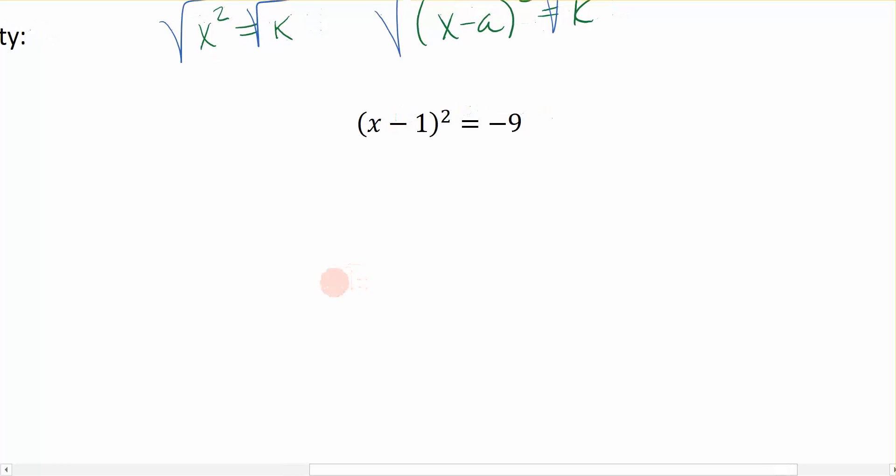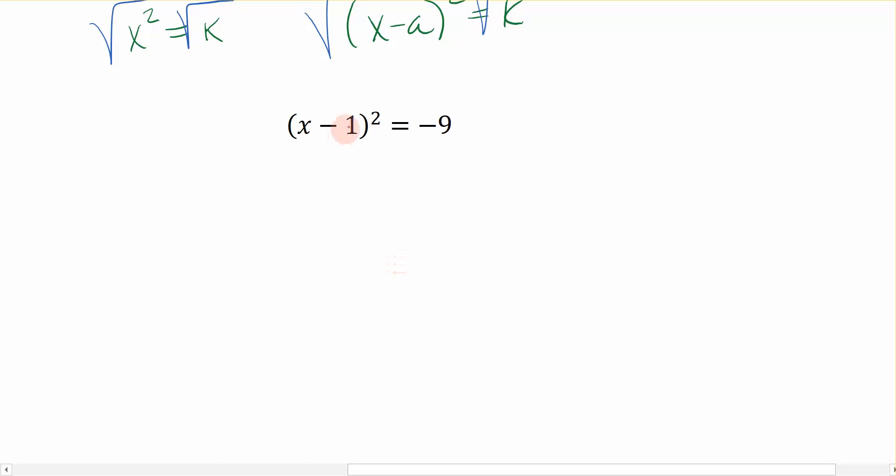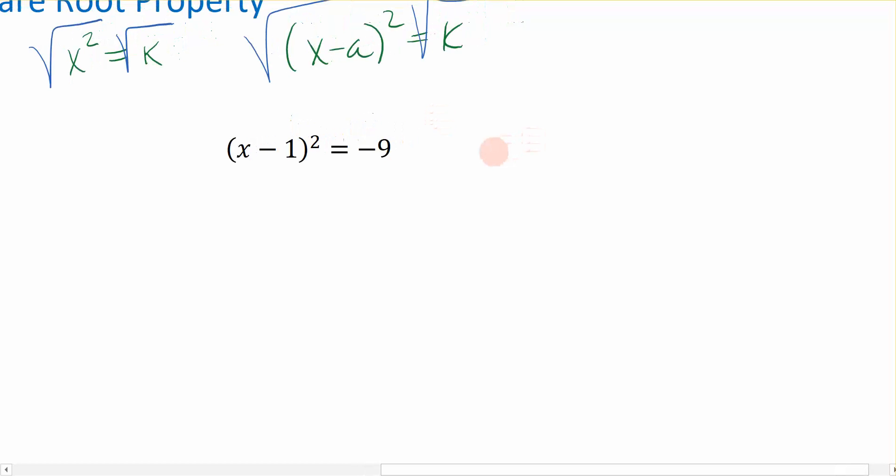Let's look at this one over here. This example has a squared term on the left, so I have something squared equal to a constant on the right. It is mimicking this idea right here. Now, since that's the case, I don't have a coefficient in front of my squared term. I have one term on the left and one term on the right. So I can just jump in and take the square root of both sides.